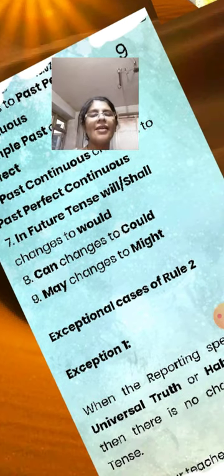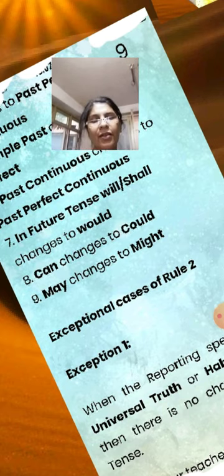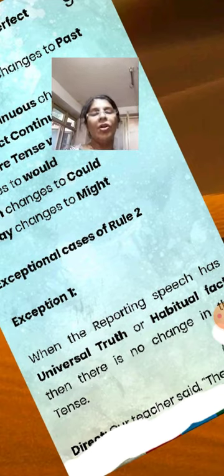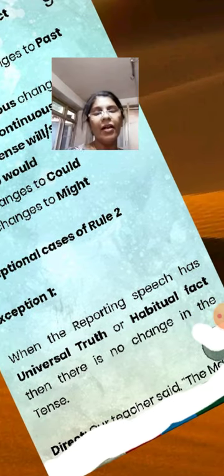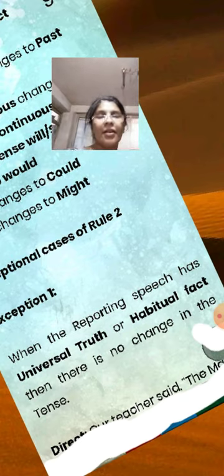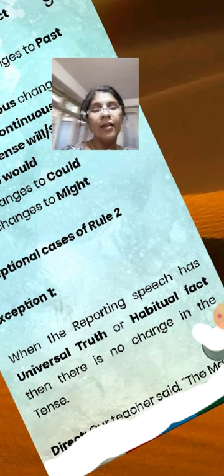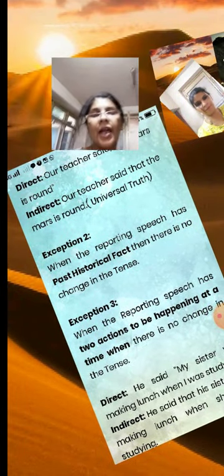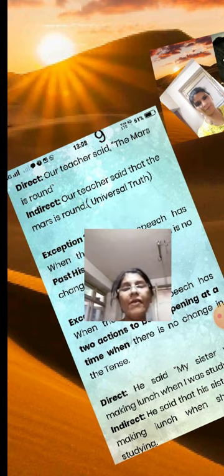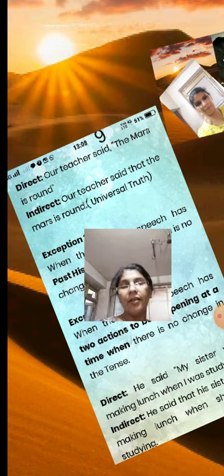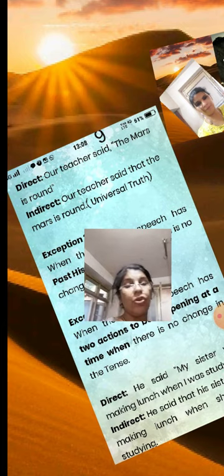Exceptional cases of Rule 2. Exception 1: When the reported speech has a universal truth or habitual fact, then there is no change in the tense. For example, direct: Our teacher said the earth is round. Indirect: Our teacher said that the earth is round. Universal truth.